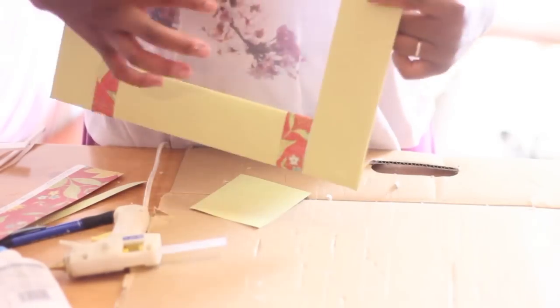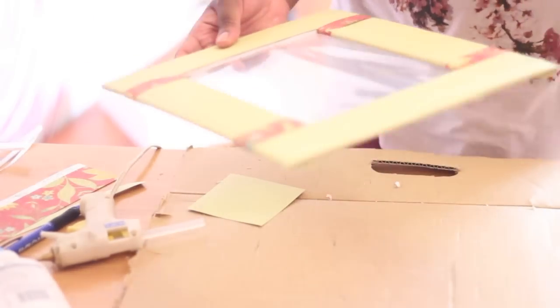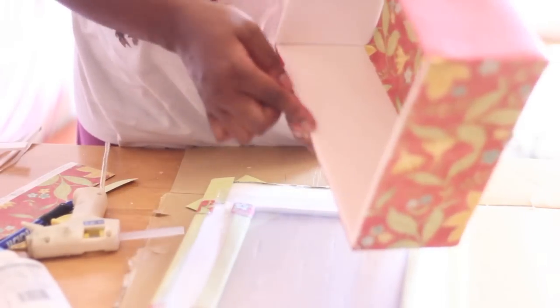So here you can see the completed frame. At this point, you're going to take your shadow box backing and put whatever you want decorative inside of the box. Then I'm simply going to glue gun down the front of the frame to the back of the shadow box.